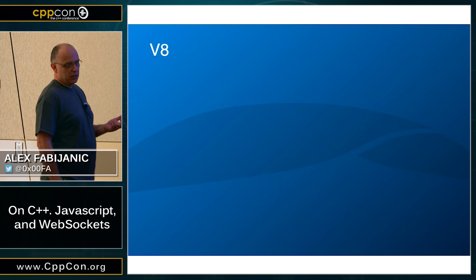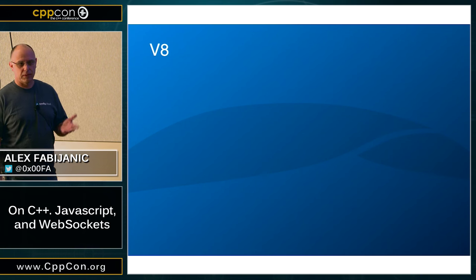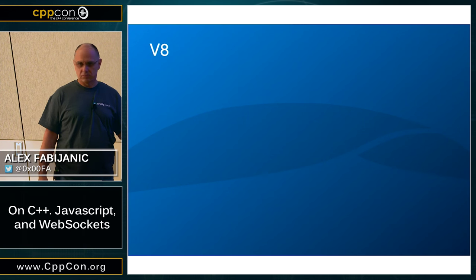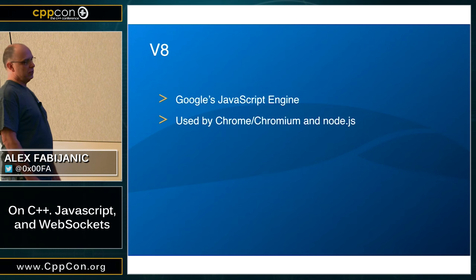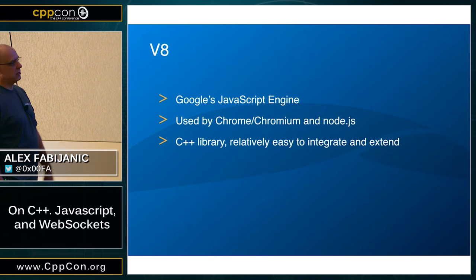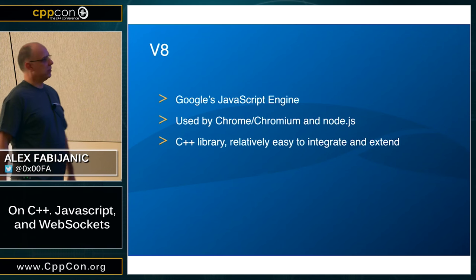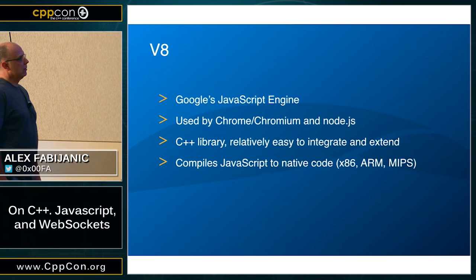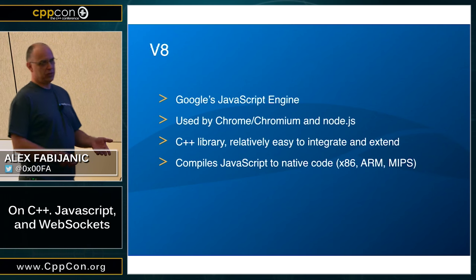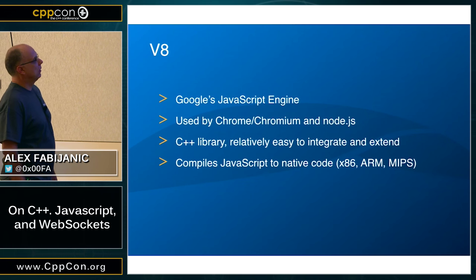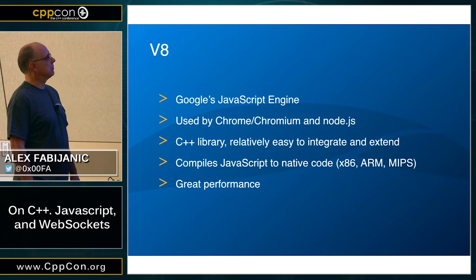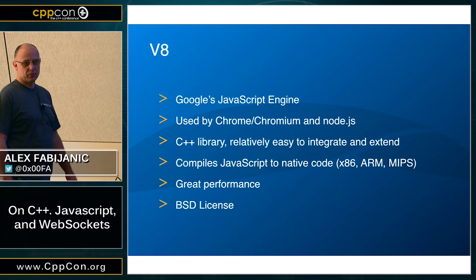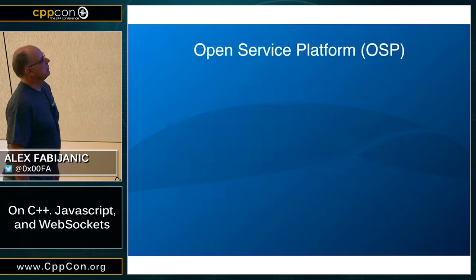We use V8 to provide support for JavaScript. How many people are familiar with V8? It's a Google JavaScript engine used by Chrome and Node.js. It's written in C++ and relatively easy to integrate and extend. It takes JavaScript and compiles to native code. It has great performance — probably the best there is for JavaScript. It's BSD licensed, so pretty liberal, including for closed-source use.